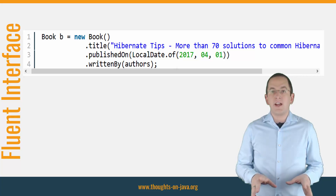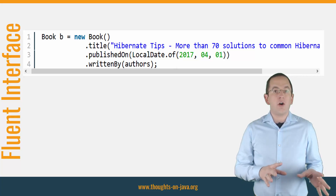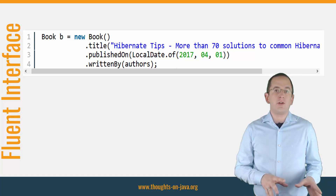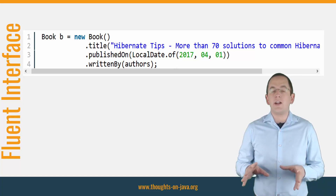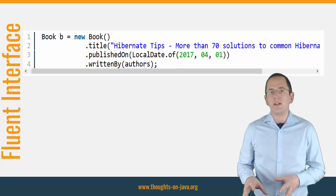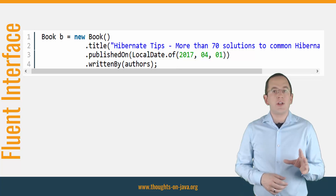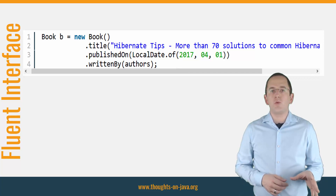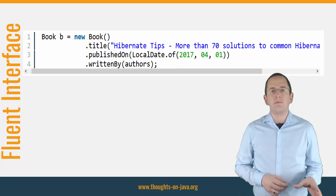APIs like these are often used for value classes and configuration data. So it's no surprise that a lot of teams would like to use them for entities.